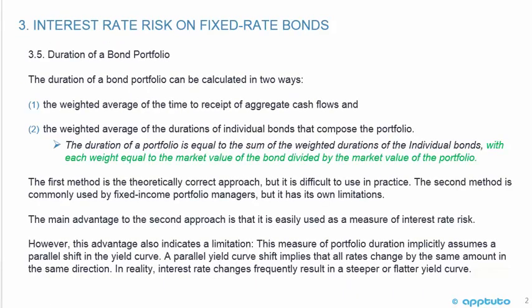The duration of a bond portfolio can be calculated in two ways. One is the weighted average of the time to receipt of aggregate cash flows. And two, the weighted average of the durations of individual bonds that comprise the portfolio.